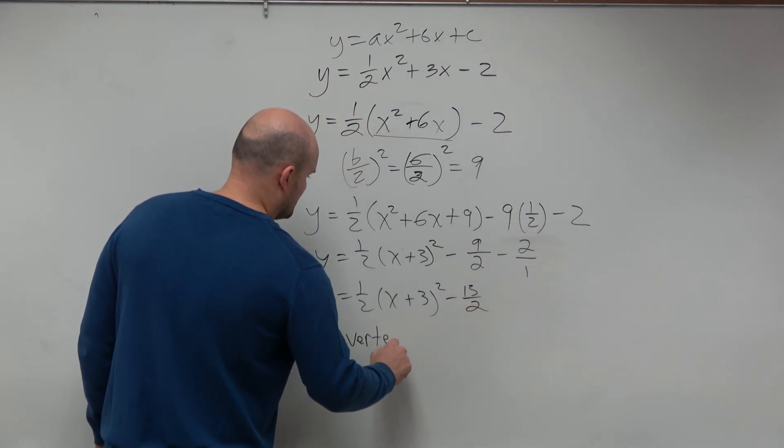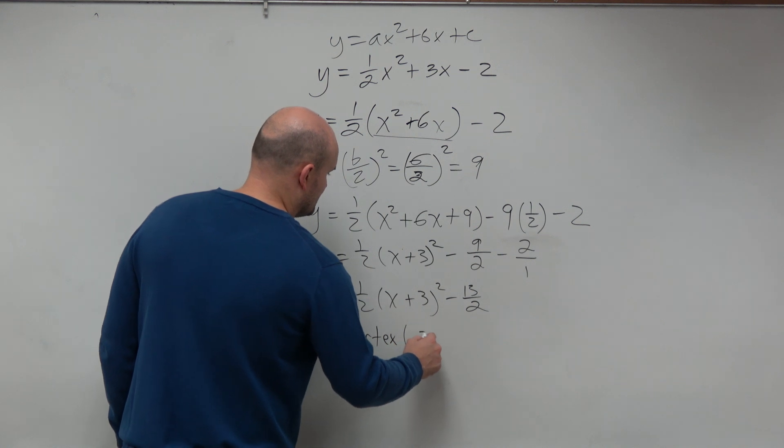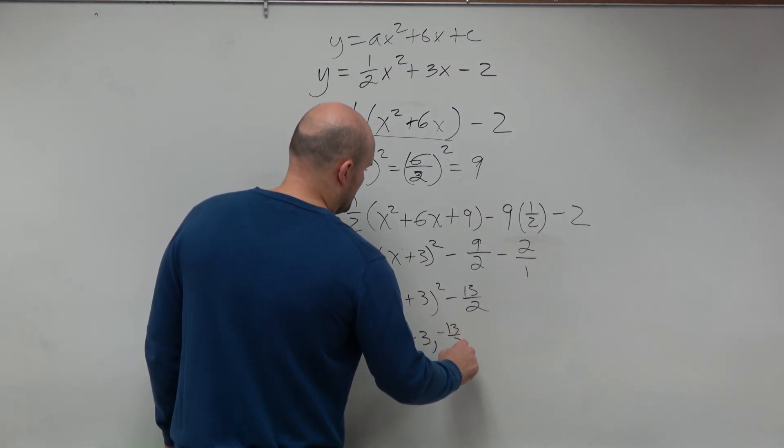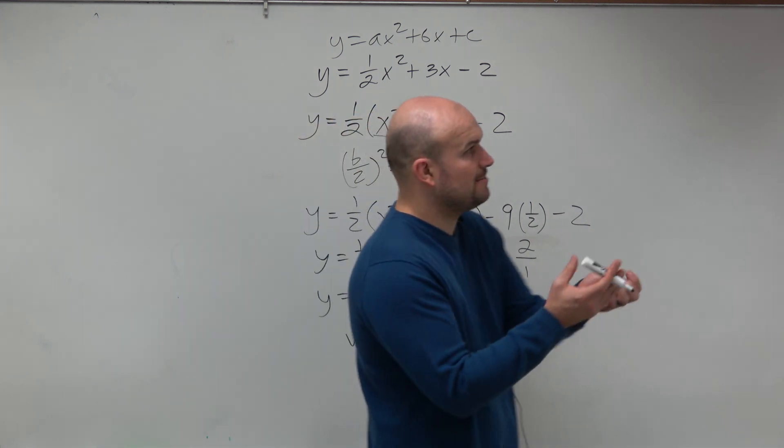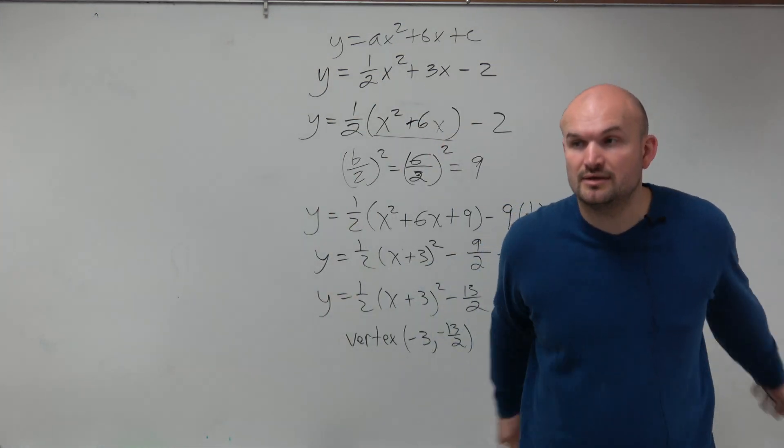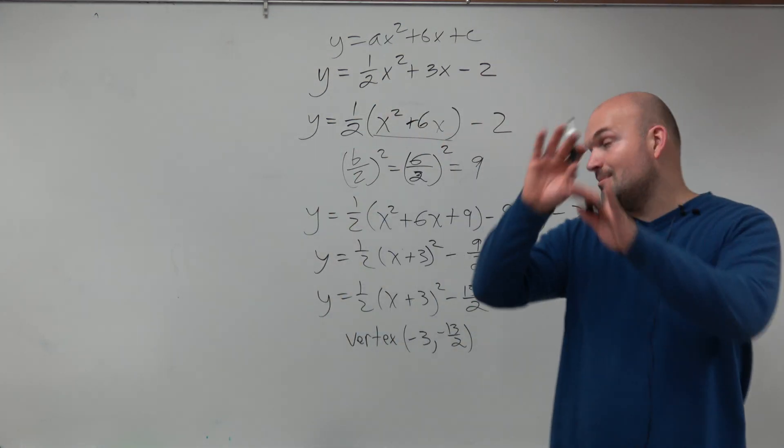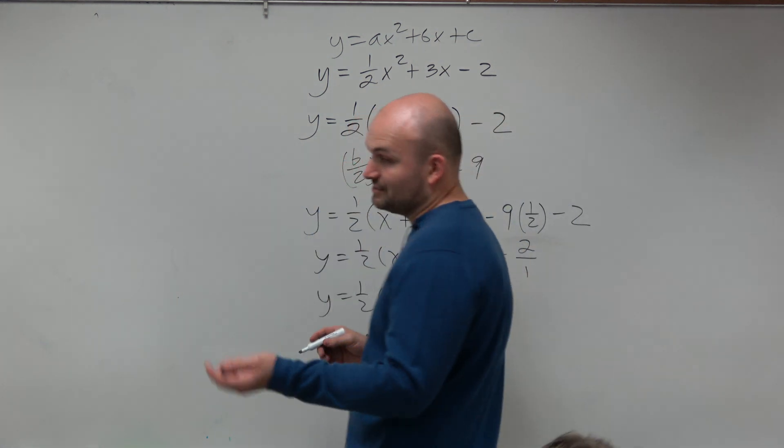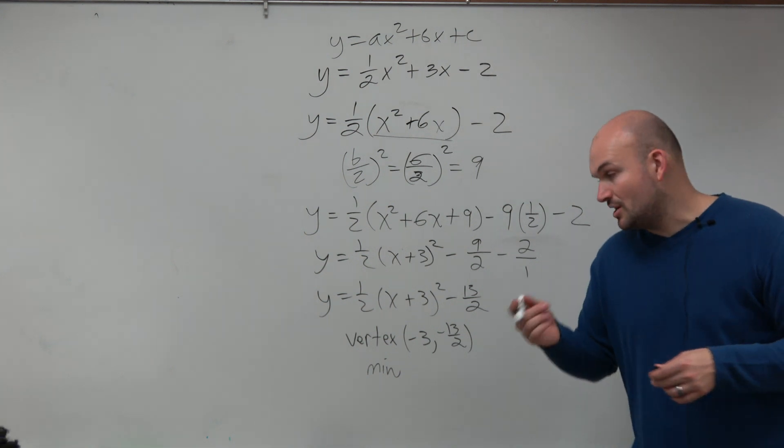So therefore, our vertex is, remember, the opposite. So it's h, k: negative 3, negative 13 over 2. And then does my parabola open up or does it open down? It opens up. So therefore, this is a minimum. It's an absolute minimum, by the way. It's bounded below.